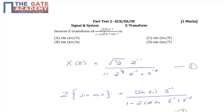X(Z) is equal to square root of 1/2 times Z^(-1) divided by 1 minus square root of 2 Z^(-1) plus Z^(-2). Let us name this as equation number 1.